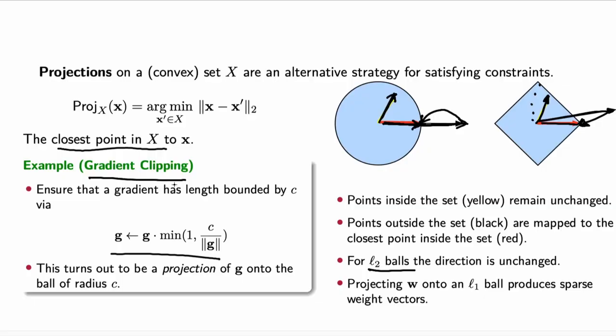One example of projections applied in deep learning optimization is gradient clipping, where in each optimization iteration you want your gradient to be bounded in its norm. You take the gradient and project it back onto a norm ball — an L1 or L2 ball depending on the type of norm — projecting it back onto a ball with some radius C.